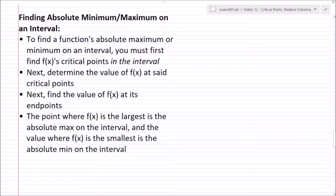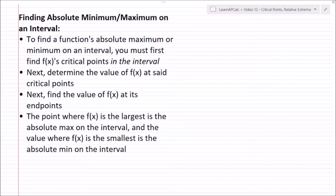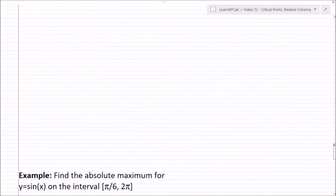After finding f of x at the critical points, plug in the values of the endpoints into f of x. The point where f of x is largest among all the values found is the absolute max on the interval, and where f of x is smallest is the absolute min on the interval.